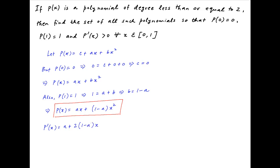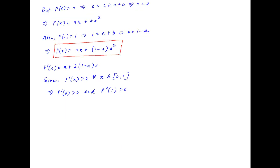Taking the derivative of p(x), we get p'(x) is equal to a plus 2 times (1 minus a) times x. We are given that p'(x) is strictly positive for all x lying in the closed interval 0 to 1. This implies that p'(0) is strictly greater than 0 and p'(1) is strictly greater than 0.